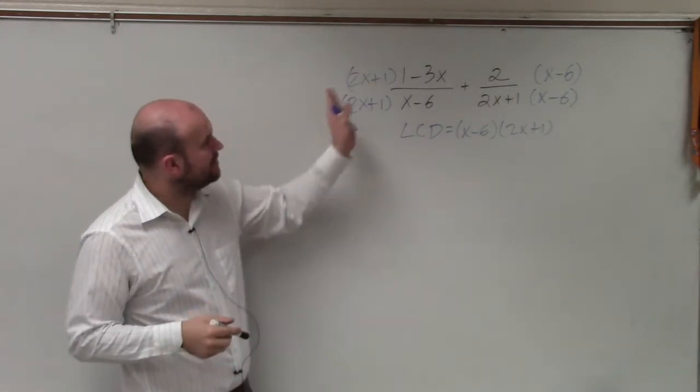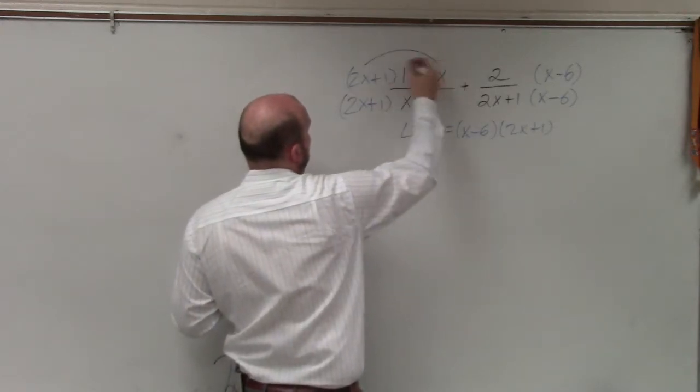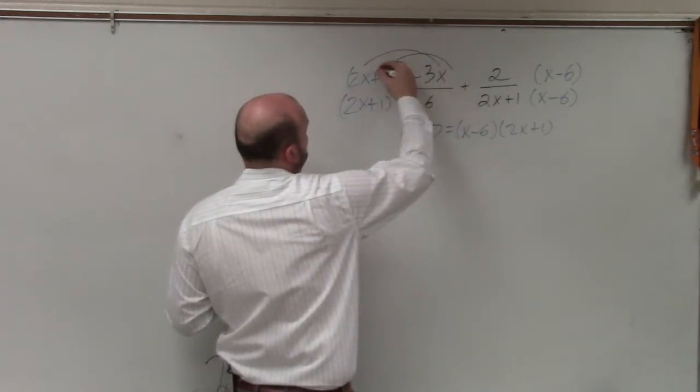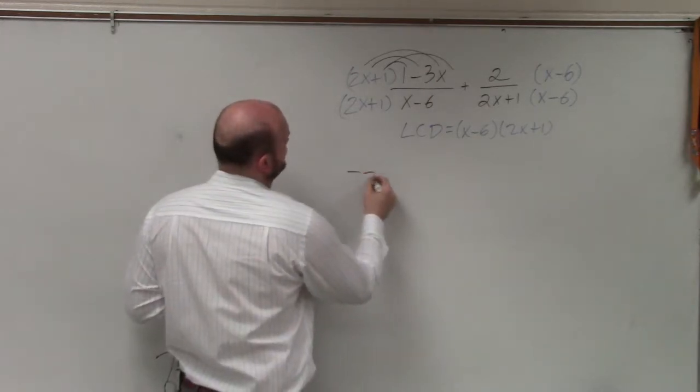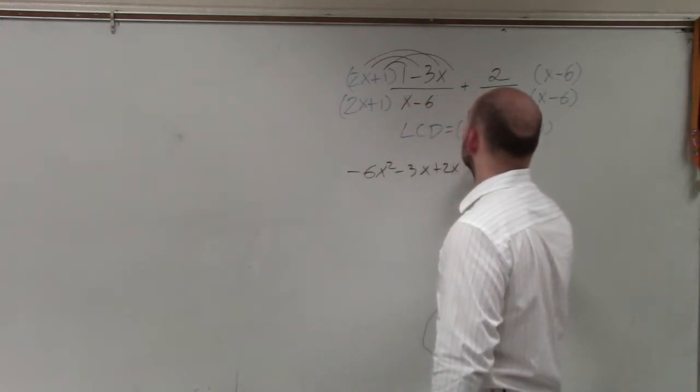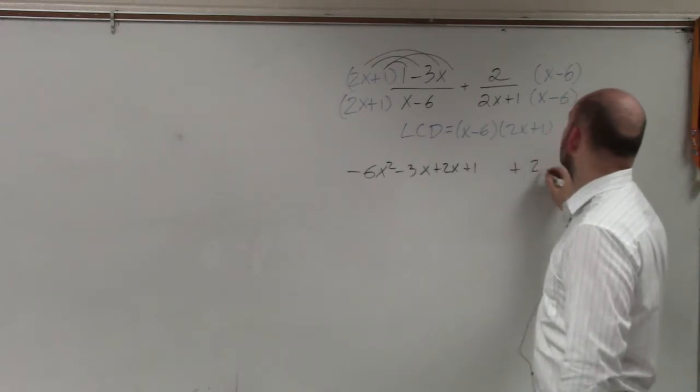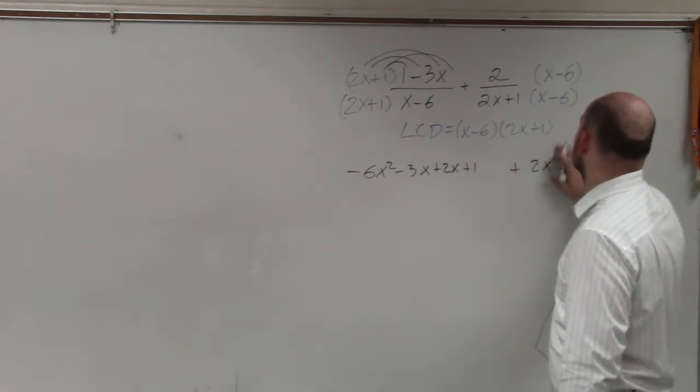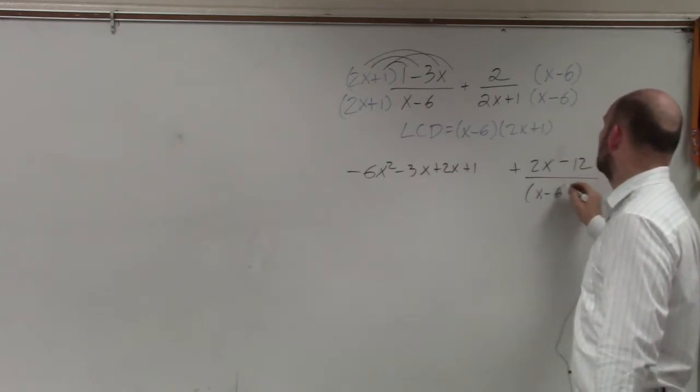Now, in this case, obviously, we're going to have to distribute. I'm going to distribute these, again, by using FOIL. So in applying FOIL, I get negative 6x squared minus 3x plus 2x plus 1. And then plus 2x minus 12. And that's all over my common denominator.